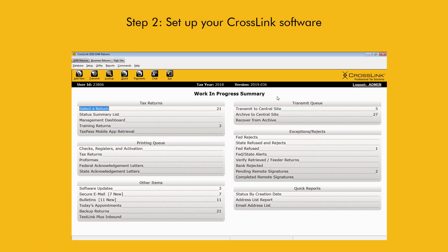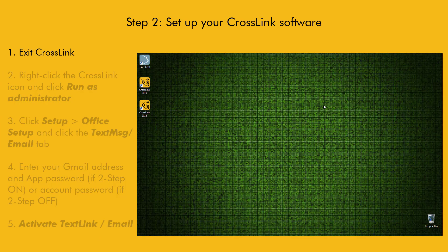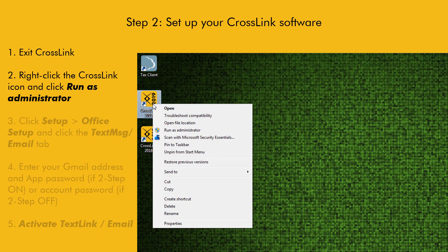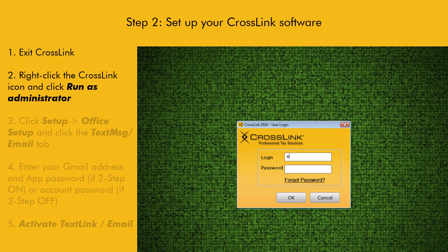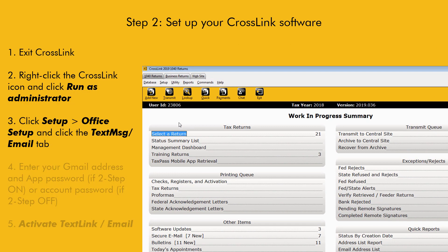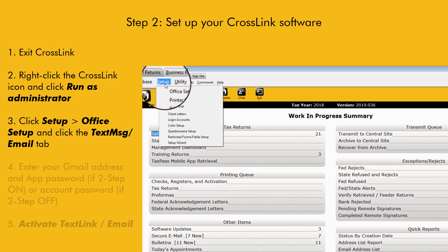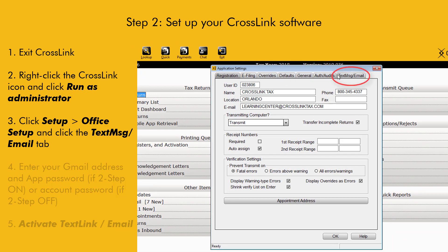To start this part of the process, we recommend you exit the Crosslink software if you have it open. Right-click the Crosslink icon you used to launch the software and click Run as Administrator from the menu. Log into Crosslink as you normally do. Once logged in, click the Setup menu and click Office Setup. Click the Text Message Email tab.